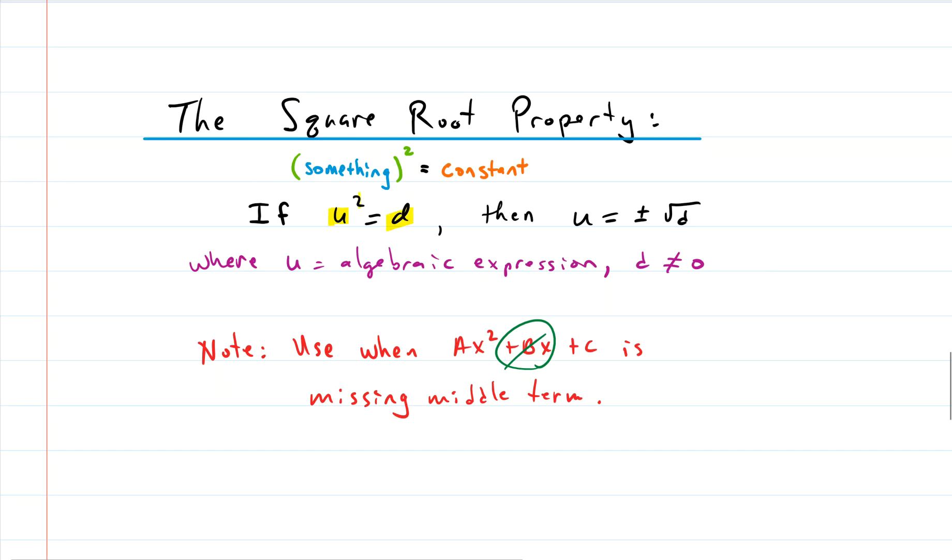If you have something squared equals some constant (D is just a constant that's not zero), then you can do this magical thing where you take the square root of both sides and put a plus or minus on one of the sides.